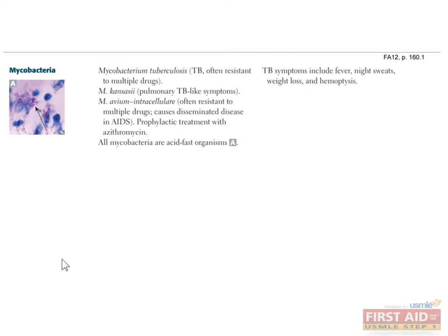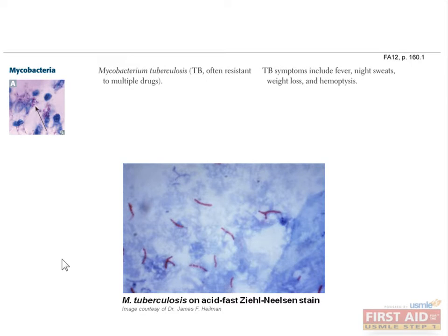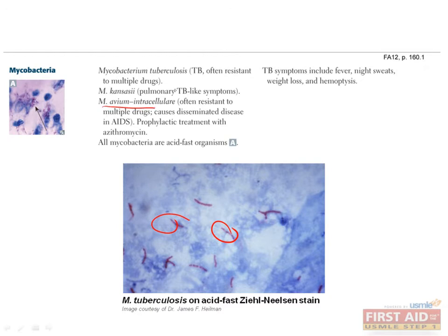Mycobacterium tuberculosis is the most important mycobacterium species to know. It is a small, non-motile, aerobic rod with a complex cell wall composed of lipids called mycolic acids. The mycolic acid cell wall is responsible for the ability to use acid-fast staining to identify M. tuberculosis, which will appear red because it resists decolorization by acids during staining. For the boards, M. avium intracellulare is seen in AIDS patients with CD4 counts less than 50 and primarily causes pulmonary infections leading to disseminated disease. Patients with AIDS should be treated prophylactically with azithromycin as their CD4 counts begin to drop.